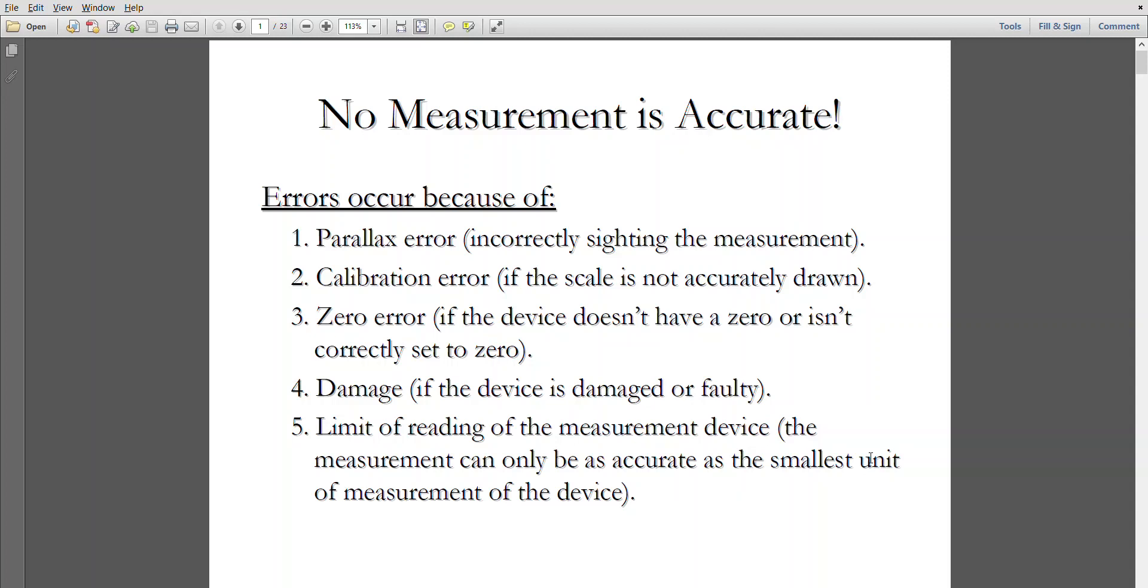Parallax error caused due to incorrect sighting of the measurement. Calibration error if the scale is not accurately drawn. Zero error if the device doesn't have a zero or isn't correctly set to zero. Damage or faulty instrument. Limit of reading of the measurement device - the measurement can only be as accurate as the smallest unit of the device.